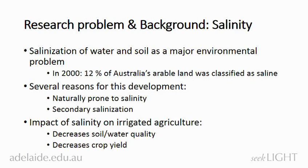To start with, I'm going to talk a little bit on the background of salinity and water trading. At the beginning of the century, the salinization of soil and water was declared as a major environmental problem in Australia and the Murray-Darling Basin. For example, in 2012, a significant percent of Australia's agricultural land was classified as saline, and this was even predicted to increase three-fold by 2050. Similar trends were observed for groundwater salinity and surface water salinity.